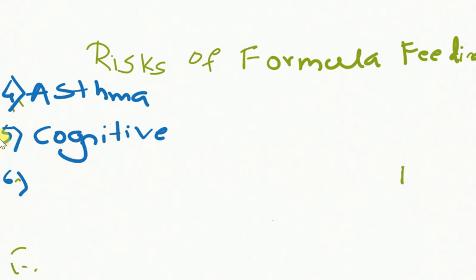Sixth point is there will be increased risk of chronic diseases like diabetes mellitus type 1, and ulcerative colitis, inflammatory diseases, ulcerative colitis, Crohn's disease. They can be at increased risk of these things.